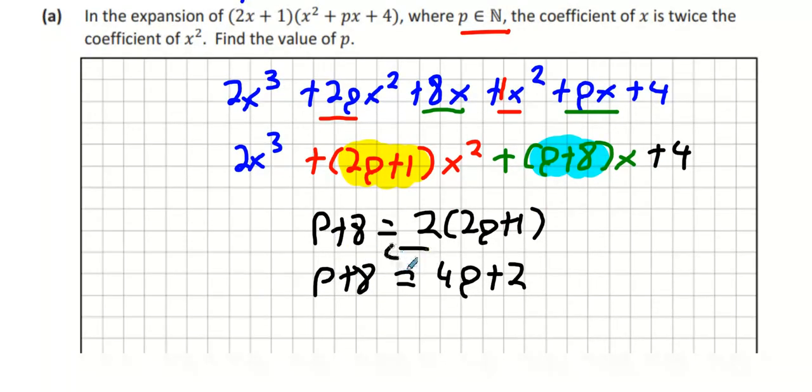I'll bring the 4p to the left and the 8 to the right. So it's going to be p minus 4p, which is minus 3p. 2 take away 8 is minus 6. And then divide across, minus 6 divided by minus 3, and p equals 2.